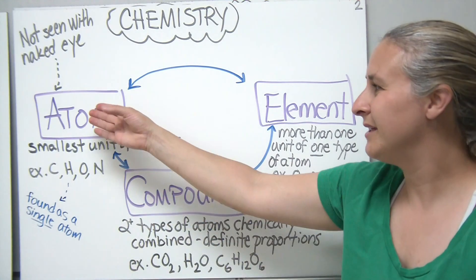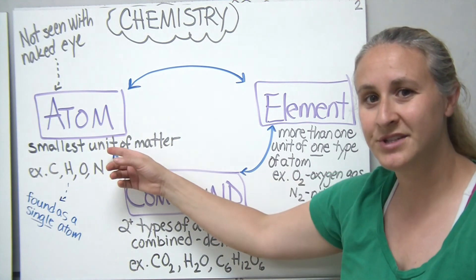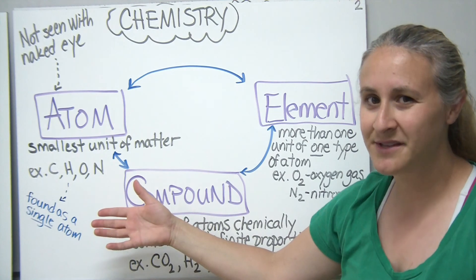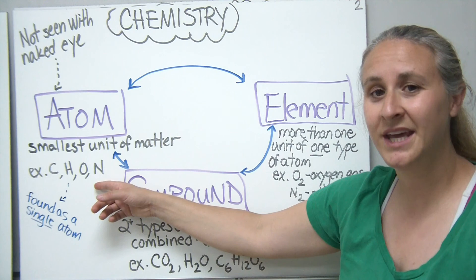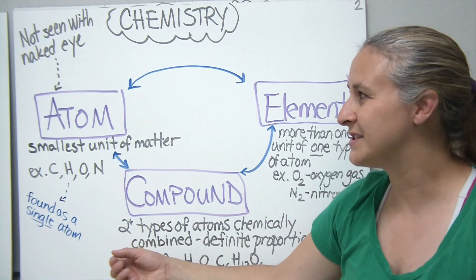So in terms of an atom, that's really our simplest or smallest unit of matter. Some examples of atoms could be carbon, hydrogen, oxygen, and nitrogen, and I know you've heard of most of these before.